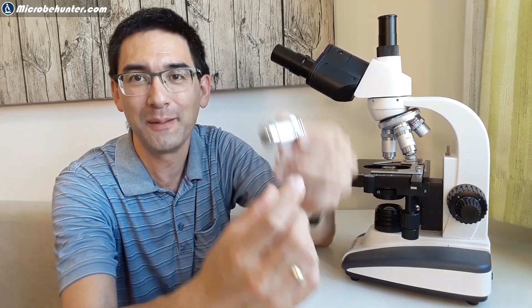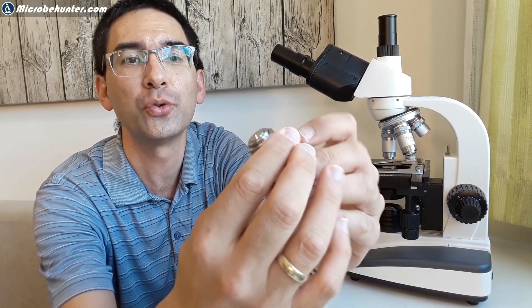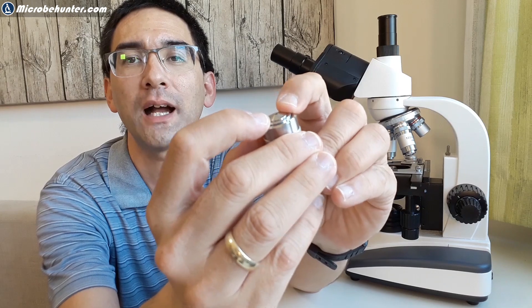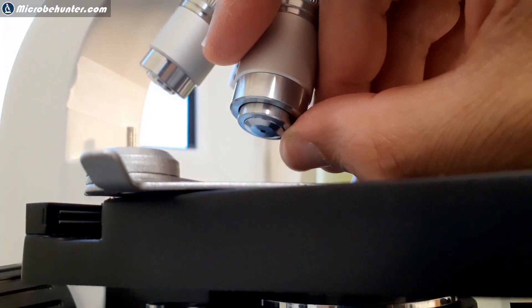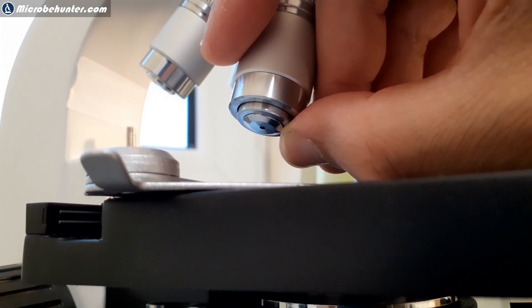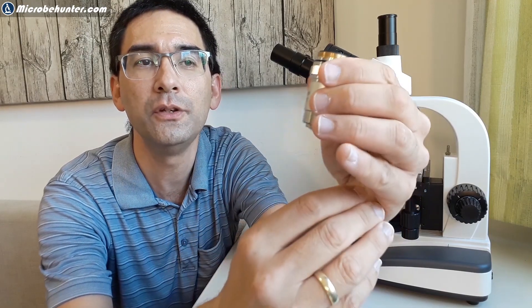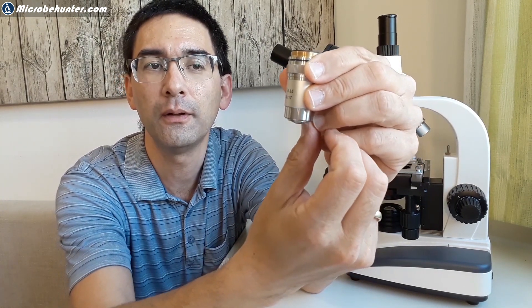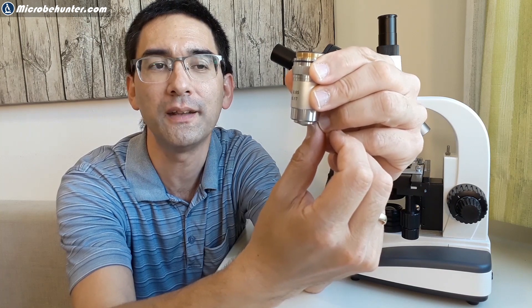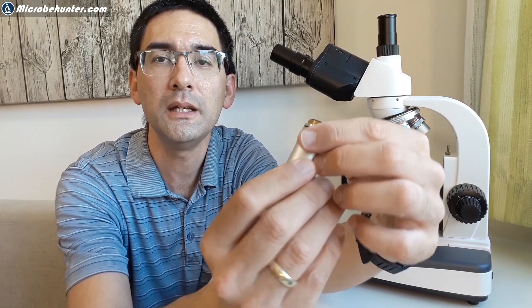The 40 times and the 100 times oil immersion objective but also the 60 times objective are spring loaded and this means that the front part of the objective can retract, can be pushed in. That's called the spring loading and this is a safety mechanism. This basically means that when you lower the objective too much so that there is the danger of it crashing into the slide then the front part of the objective and the slide won't be damaged because the objective front lens will be pushed in like this. This is a safety mechanism that can be found on many educational microscopes and it's quite a nice feature to have.